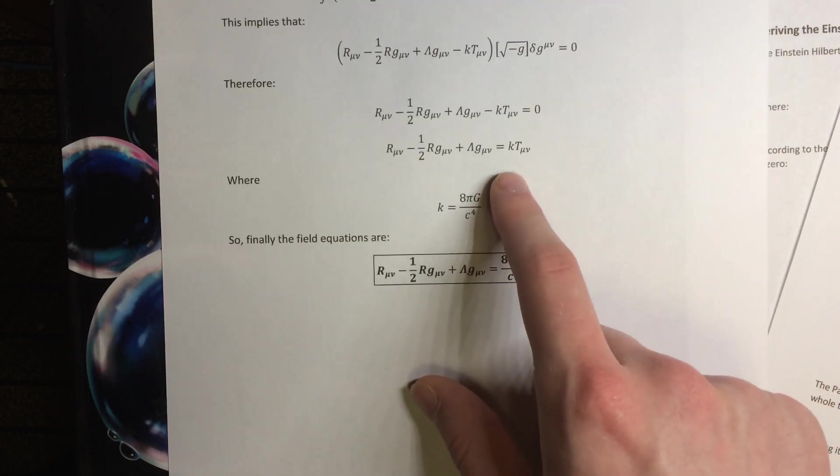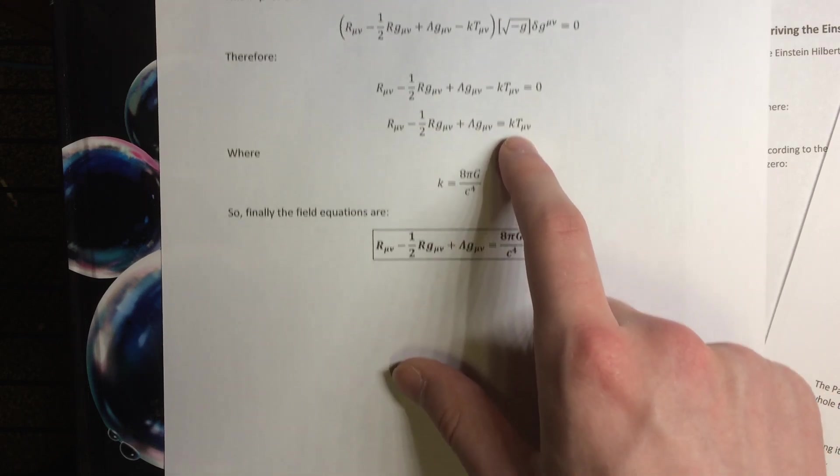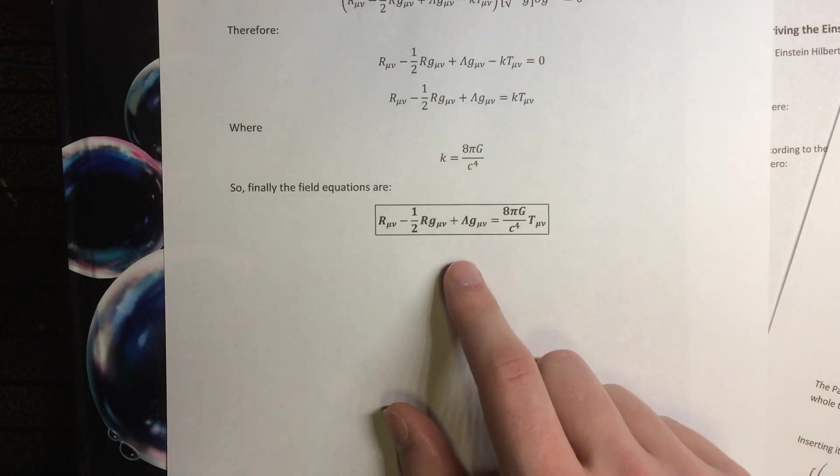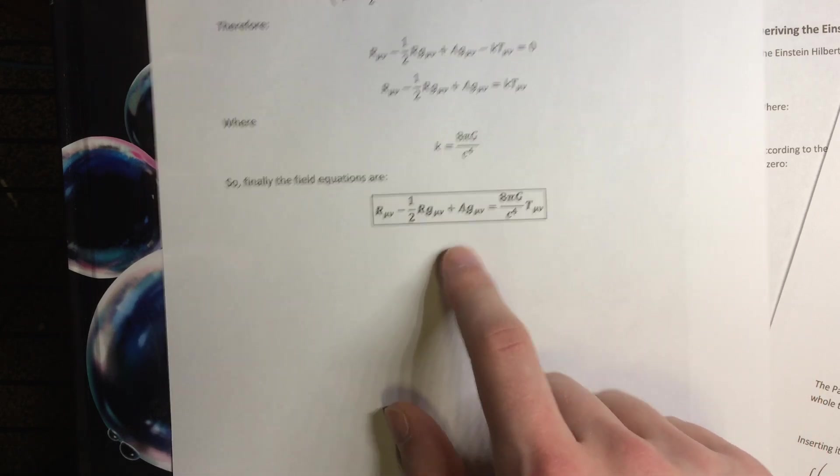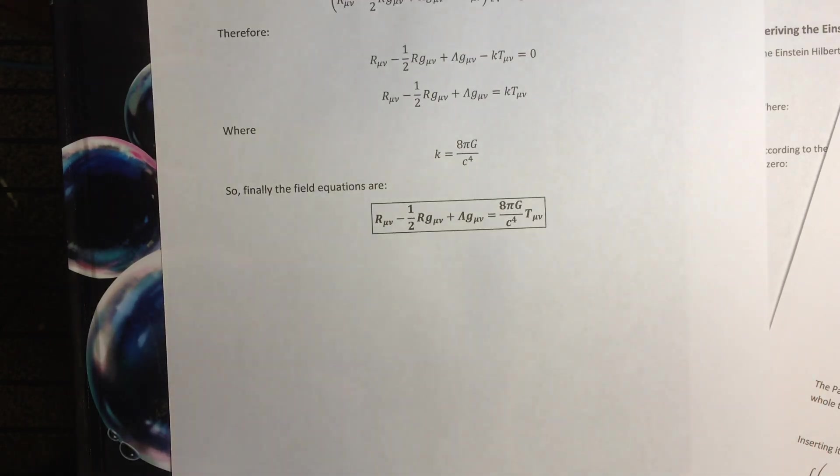Adding this to the other side, and remembering that k equals 8 pi g over c to the fourth, then we finally have the Einstein field equations from the Einstein-Hilbert action. That's how it works, it's a nifty calculation, it's very beautiful, it's sort of surprising, and it's actually not as complicated as you might think. Dietrich out.